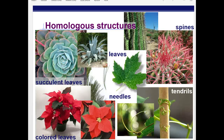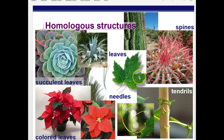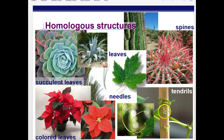Even leaves are said to have homologous structures. Leaves come in many different forms and shapes — from spines and needles to the familiar maple leaf, to poinsettia leaves, to succulent leaves — all homologous from a common ancestor plant very long ago.